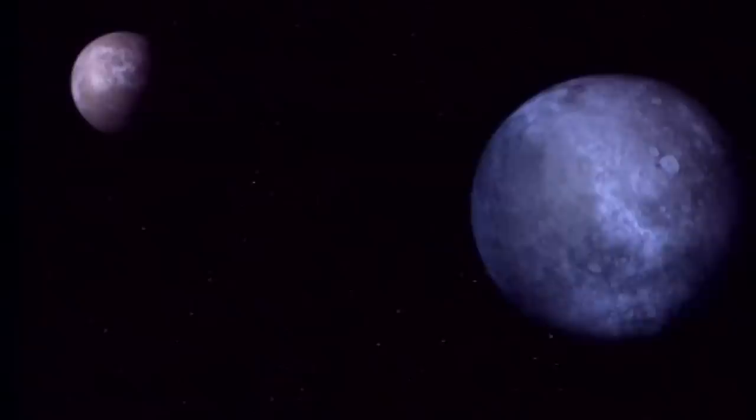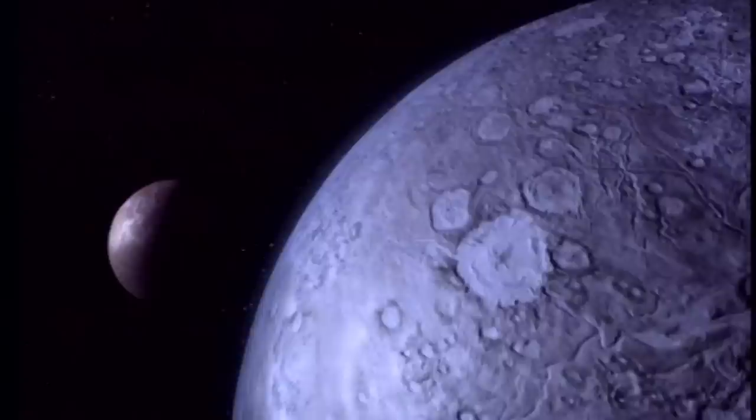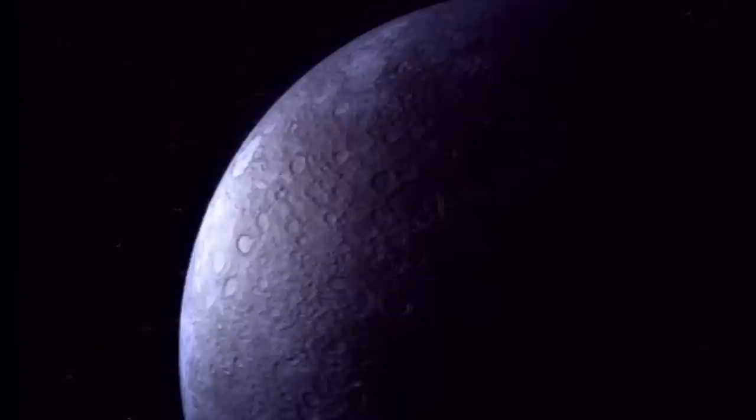Pluton et son satellite Charon ont à eux deux une masse inférieure à un cinquième de celle de notre lune. Ce sont deux petits mondes de méthane et d'eau gelés dans l'obscurité des confins du système solaire. Pluton et son satellite sont en moyenne 40 fois plus éloignés du Soleil que notre Terre.